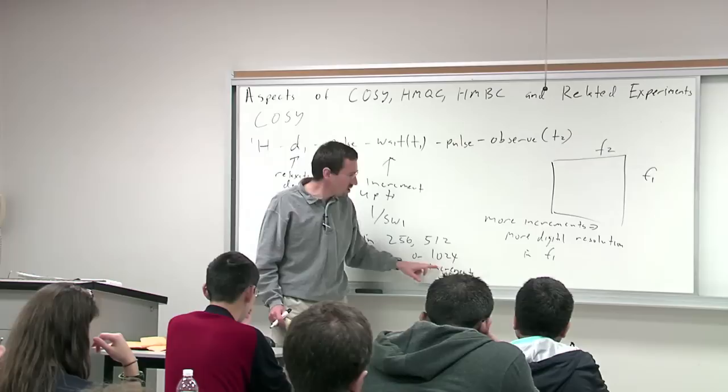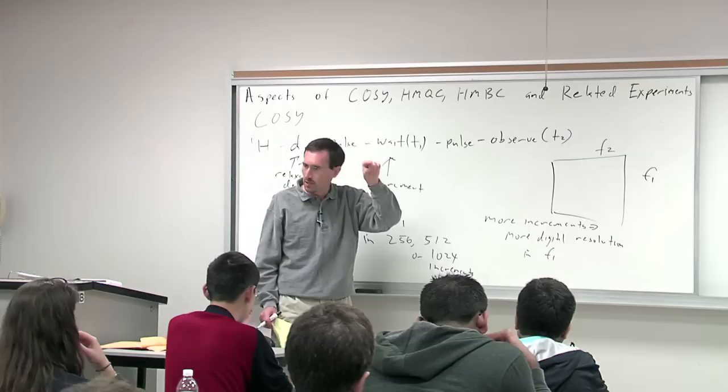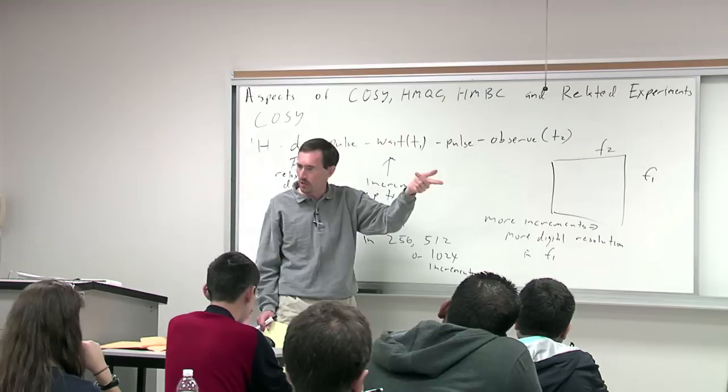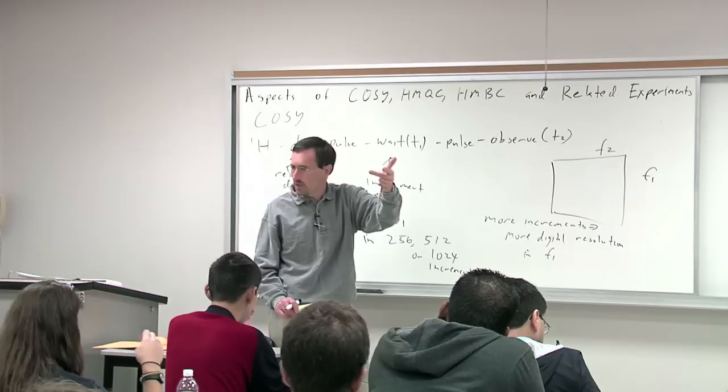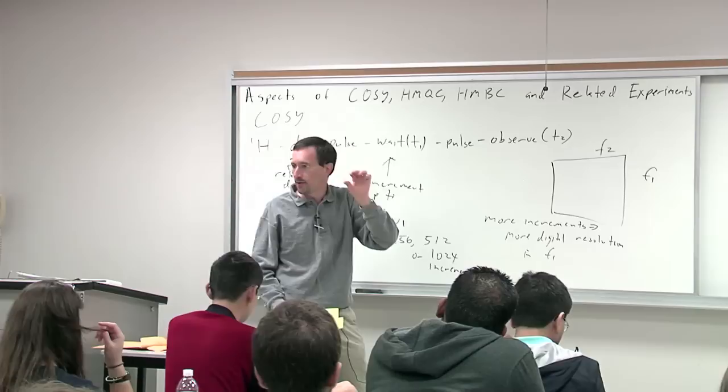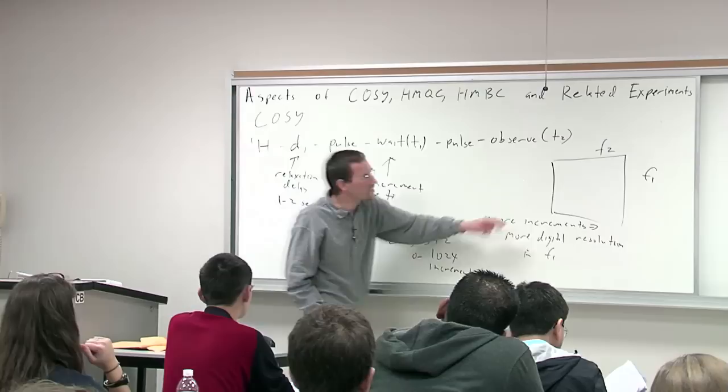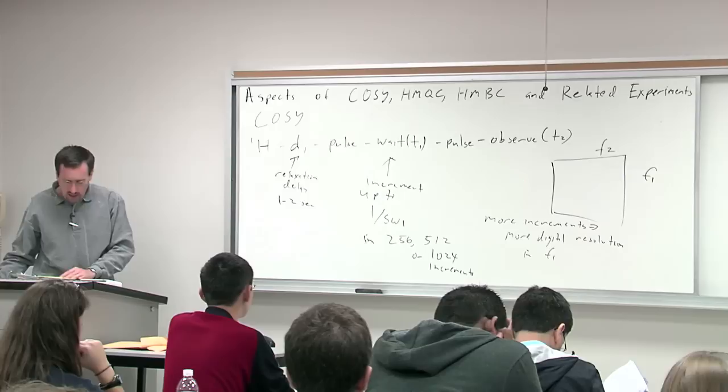There are various tricks with zero filling. If you collected 1024 increments, your digital resolution would be 6,000 divided by 1024, which is about 6 hertz — more like a typical peak size. Zero filling adds data points artificially but doesn't actually add new data; it can tighten up your digital resolution. Typically downstairs you're zero filling to 1024 to artificially get your digital resolution to about 6 hertz in this dimension.